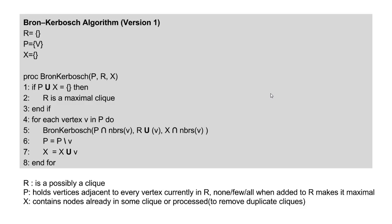Now let's go to the Bron-Kerbosch algorithm. Version 1 — Version 2 is a little more optimized — but this is already much better than brute force. Bron-Kerbosch takes three sets: R = empty, initially P = V (the set of nodes of graph G), and X = empty. It is a recursive algorithm taking parameters P, R, and X. Step 1: if P ∪ X is empty, report R as a maximal clique. Otherwise, for each vertex V in P, call Bron-Kerbosch recursively with P = P ∩ N(V), R = R ∪ {V}, and X = X ∩ N(V). While returning, remove V from P and add V to set X.